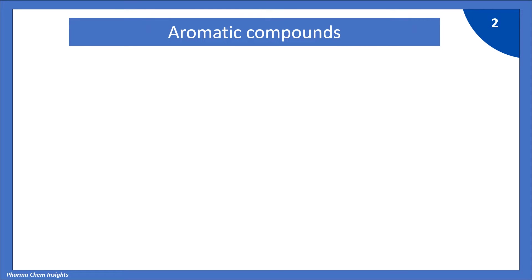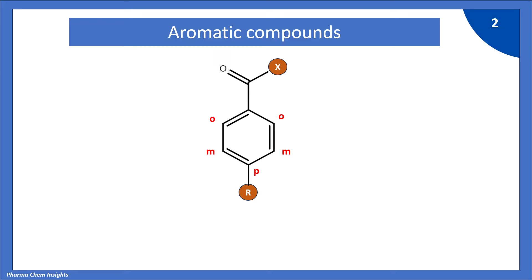Let us see the structure of aromatic compounds. The typical aromatic compound is a benzene ring which has conjugated double bonds in a ring. Further, when this benzene ring is substituted with any carbonyl compound, it has stronger pi to pi-star transitions. Additionally, when any functional group is present at the ortho, meta, or para position of the benzene ring, it has an incremental effect on the lambda max of that particular compound.